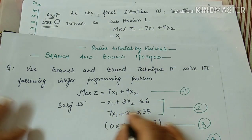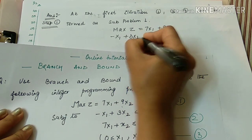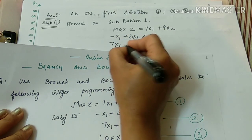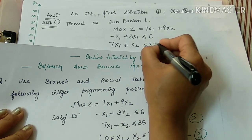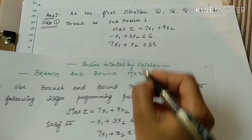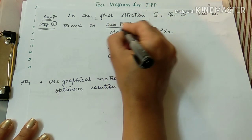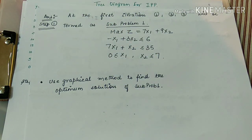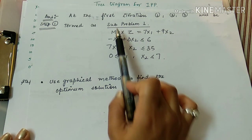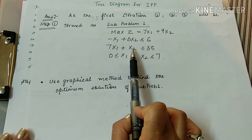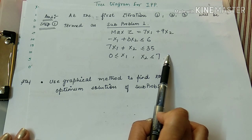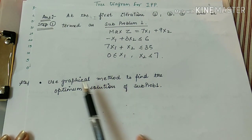The value of x1 and x2 is also listed — this is termed as your sub-problem one. After writing sub-problem one, we need to solve this problem. In the branch and bound method we use the graphical method. So every time you have to write the same step: use graphical method to find the optimum solution of the problem.